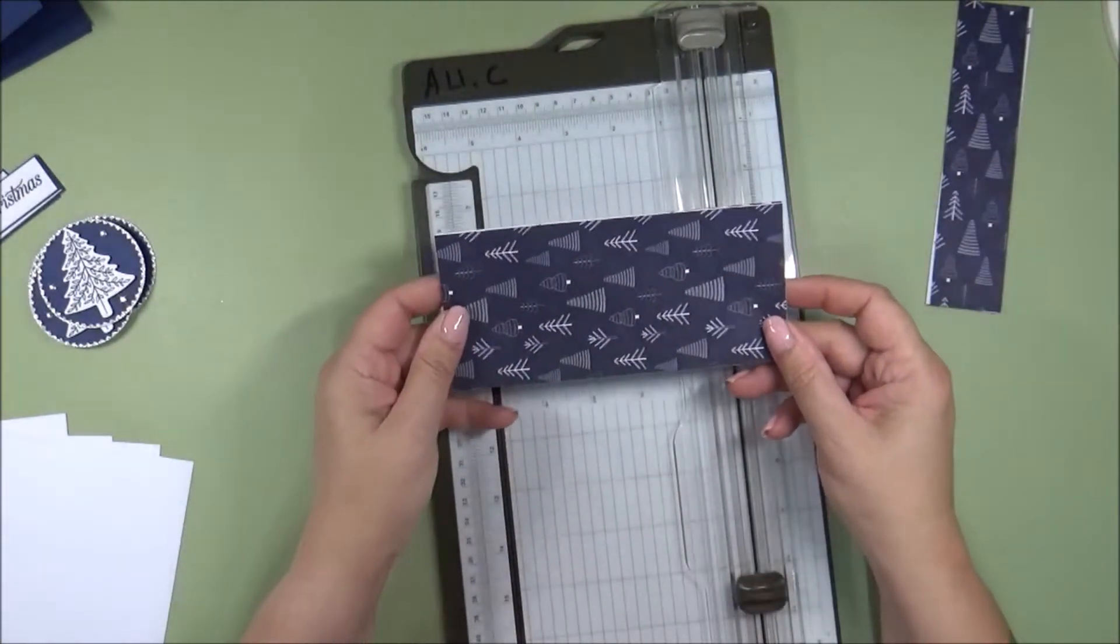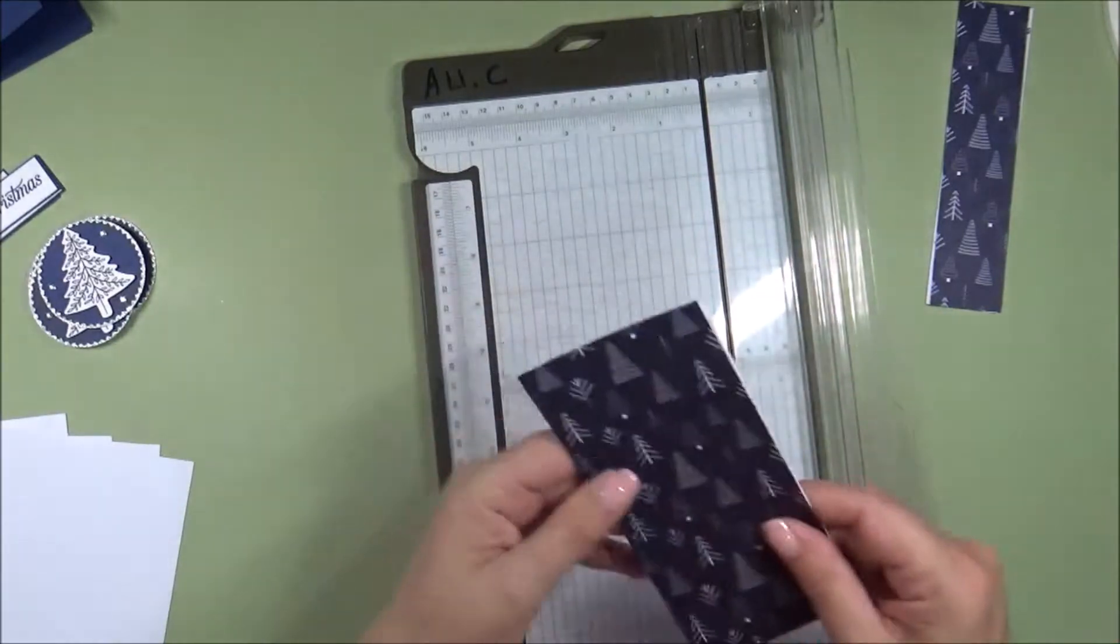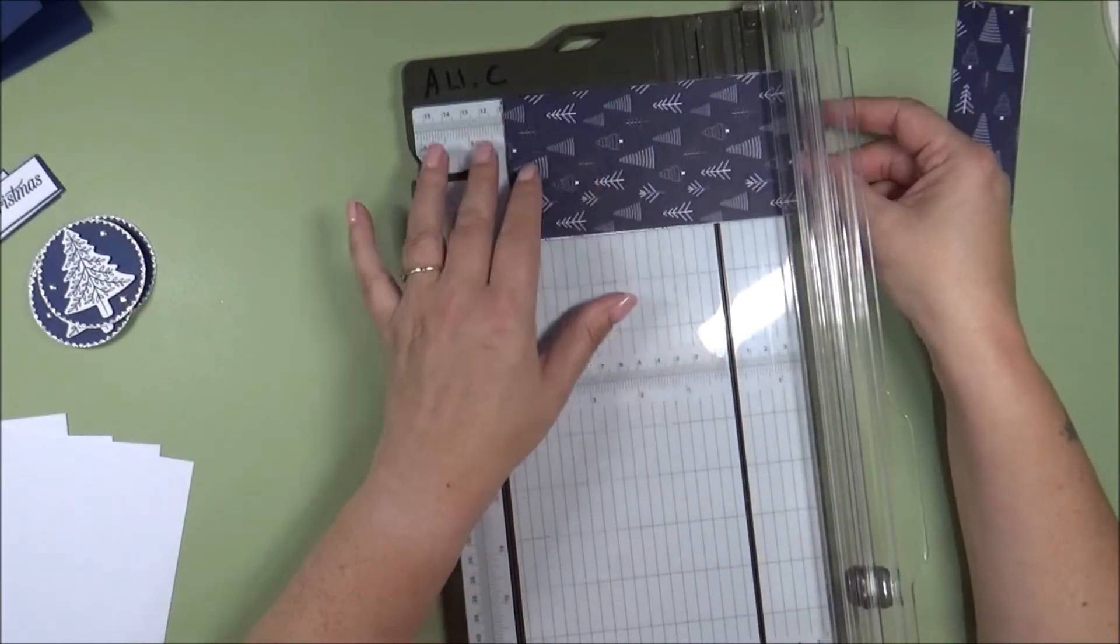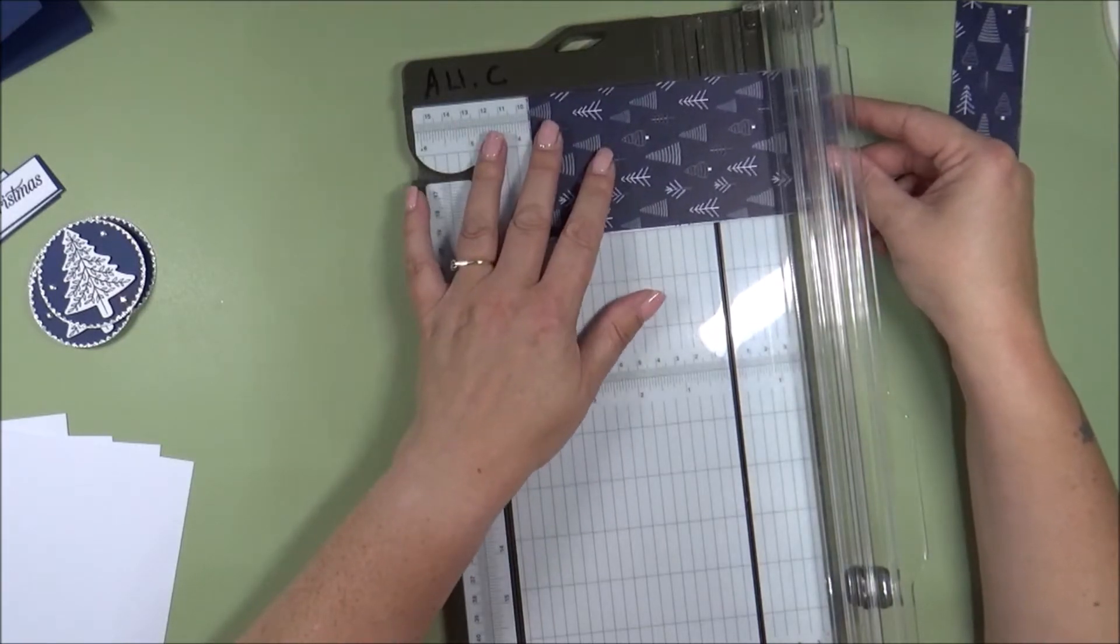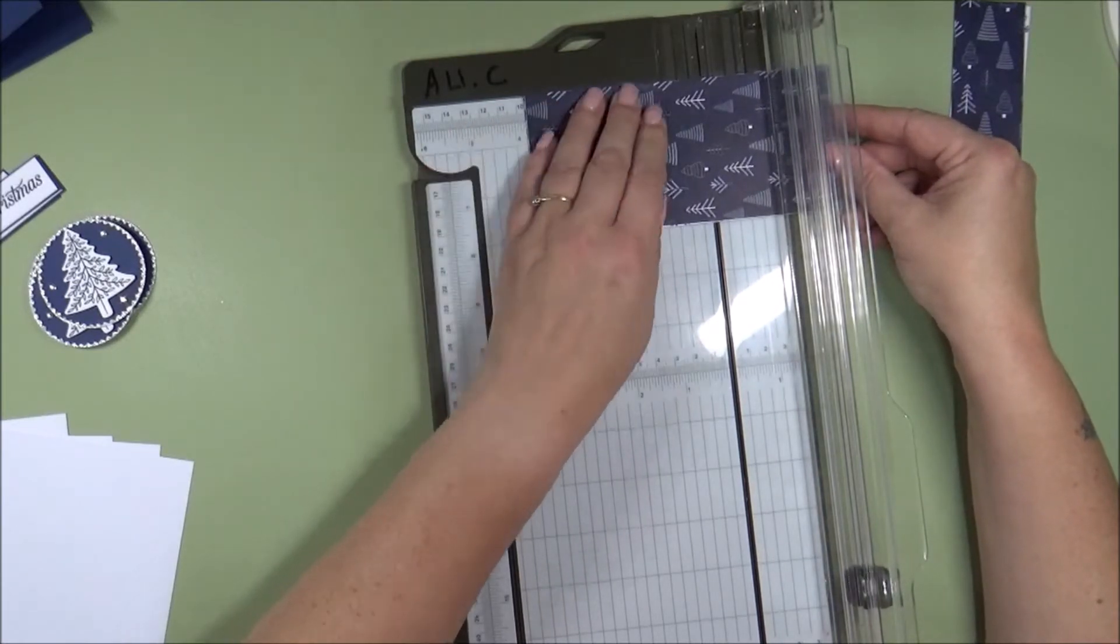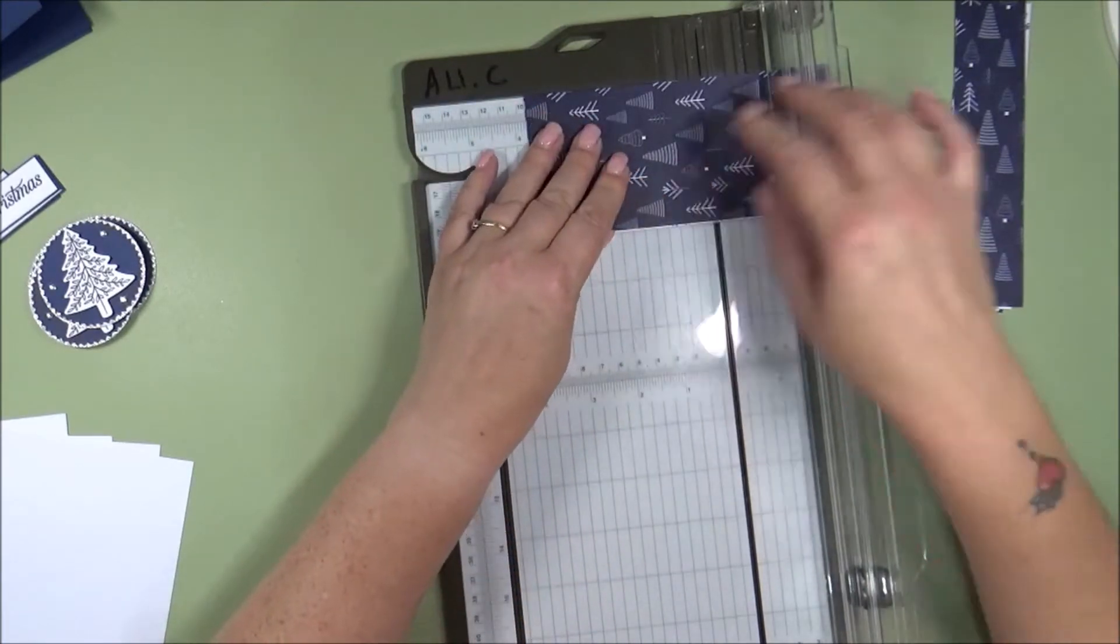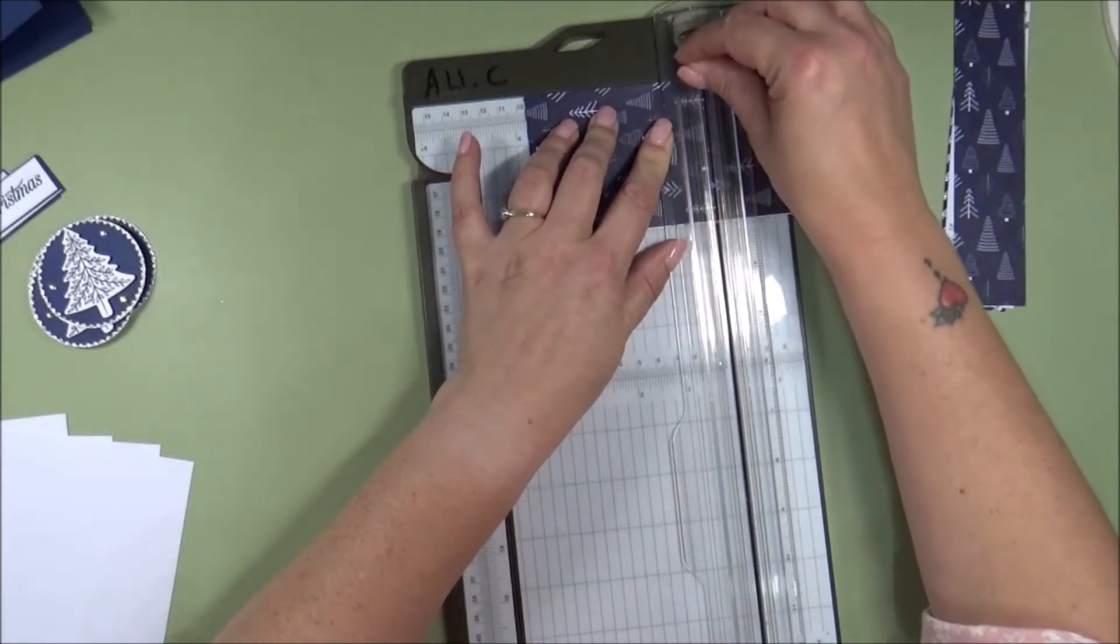And you then want to rotate it. And so we're now on our 6 1⁄2 length. So we're then going to, I mean, it's up to you where you want to cut it. I'm going to cut mine at, I think, 3 3⁄4. Like that. And so I've rotated it, so I've got the top of the trees on the left-hand side. And so I'm going to cut at 3 3⁄4.